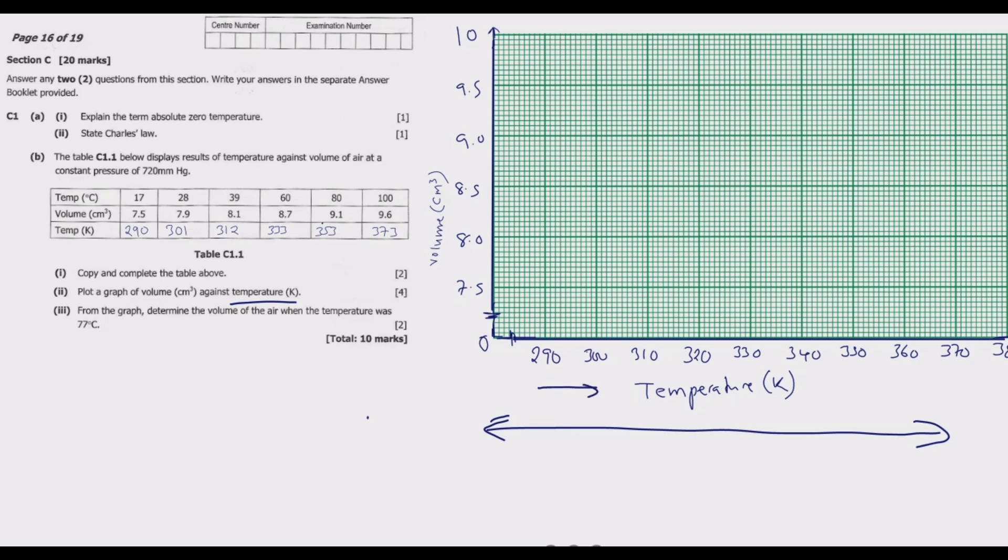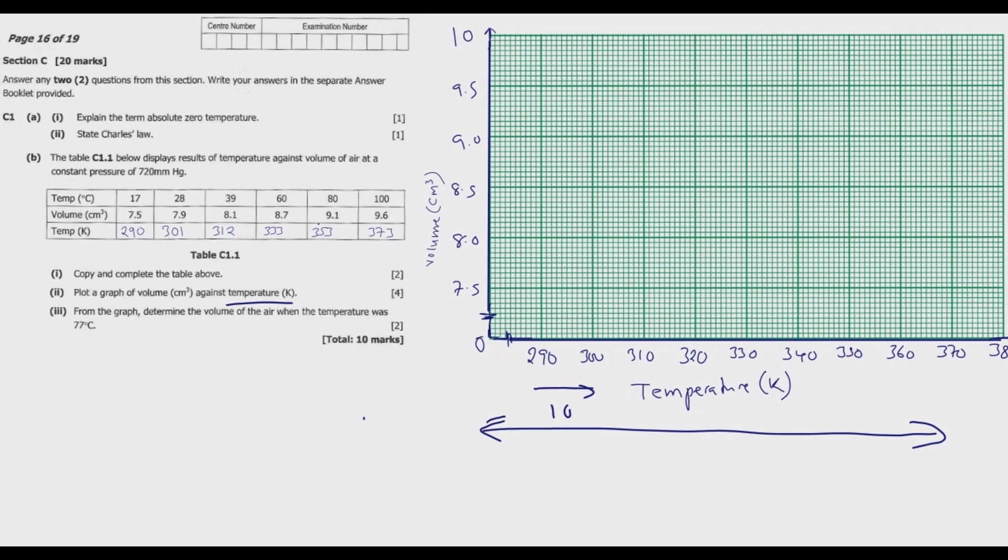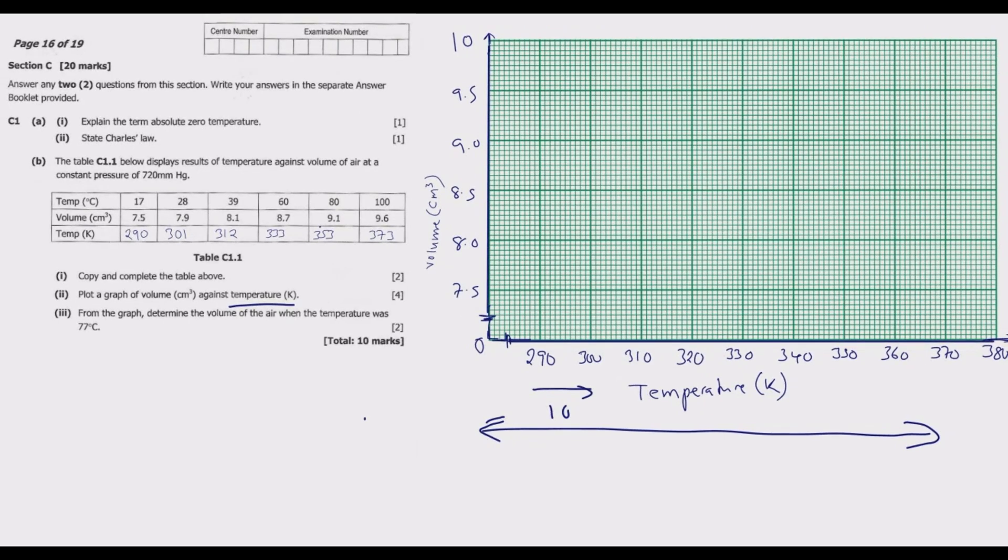What you notice here is we are increasing by the interval of 10 units all the way up to 380. So 380 is the maximum value to ensure we capture all the information. Similarly, we are increasing by 0.5 units because the lowest here is 7.5. We've just included the symbol to see that this graph is jumping from 0. There are numbers that have been jumped here to start from 290 and also numbers jumped between 0 and 7.5.